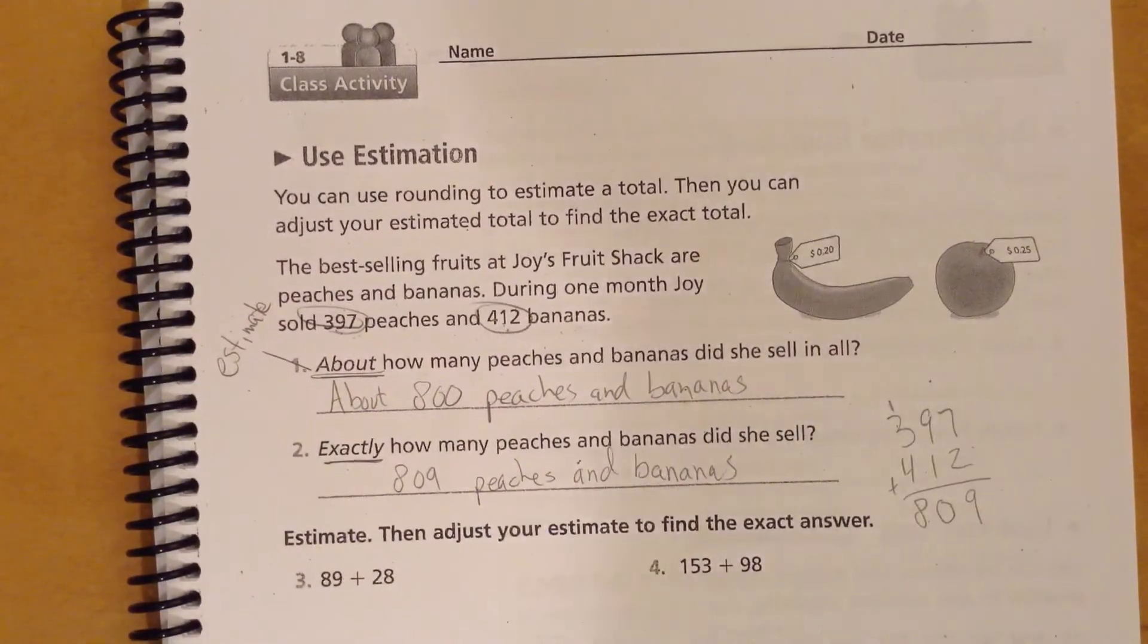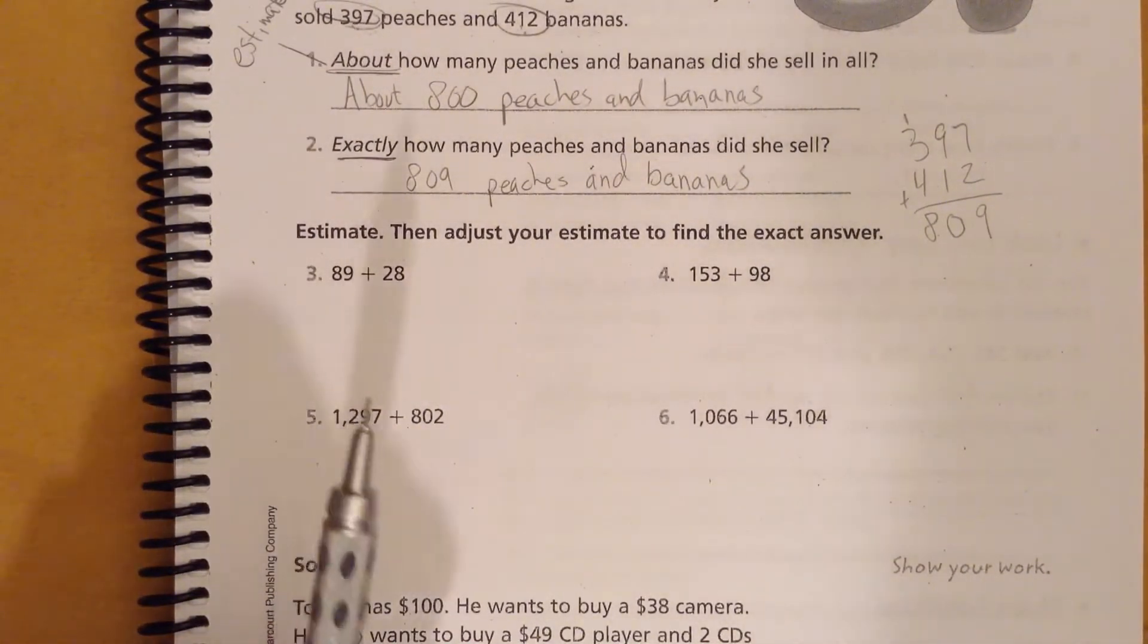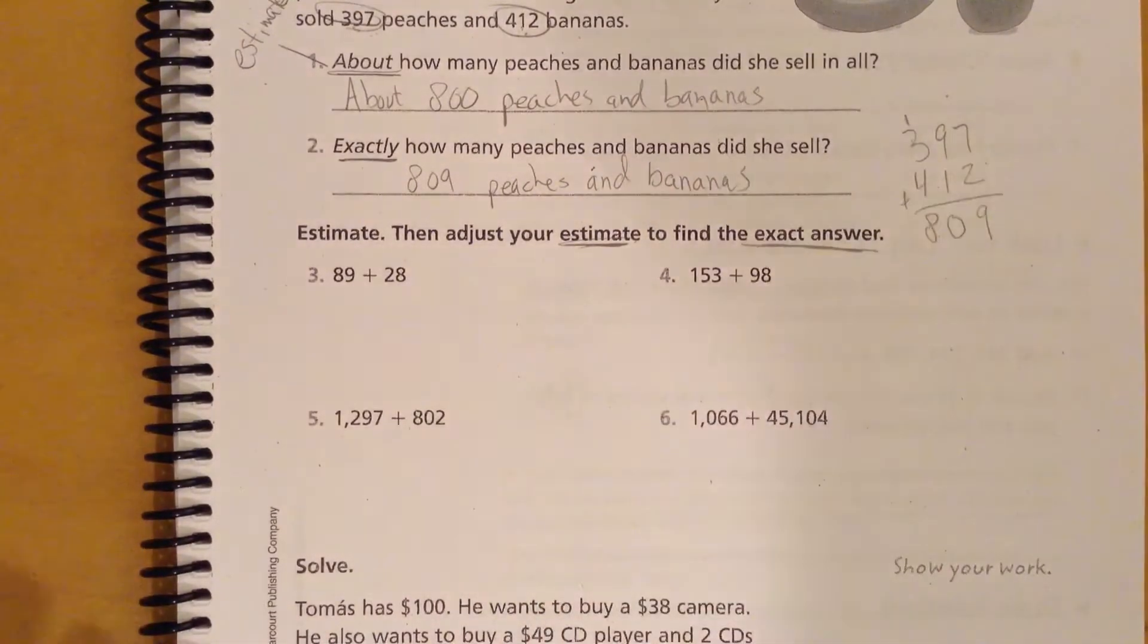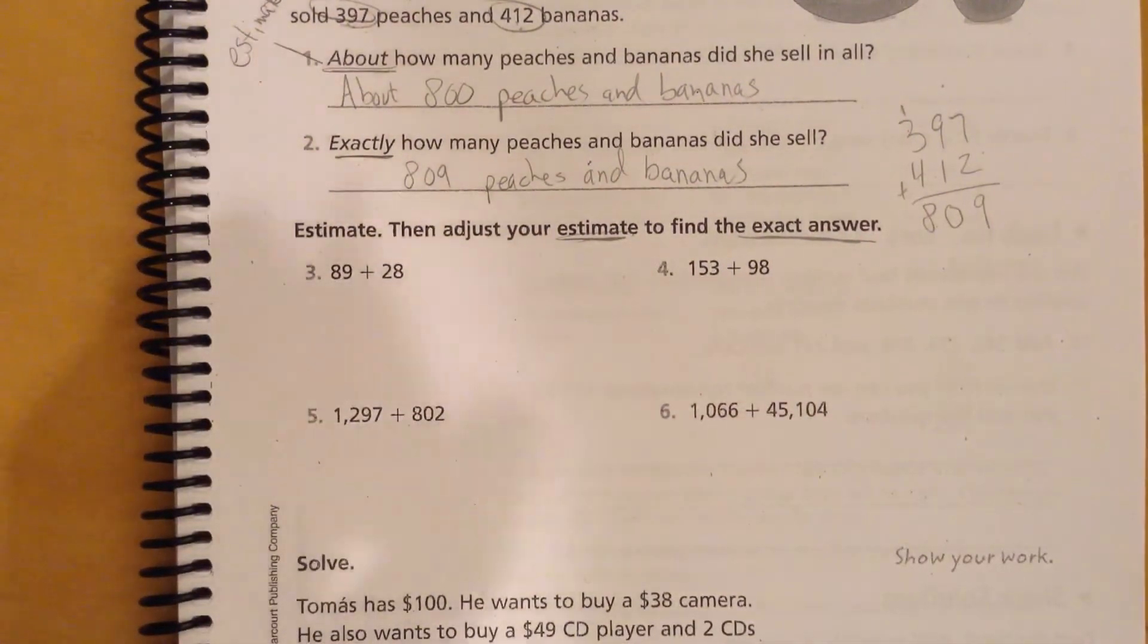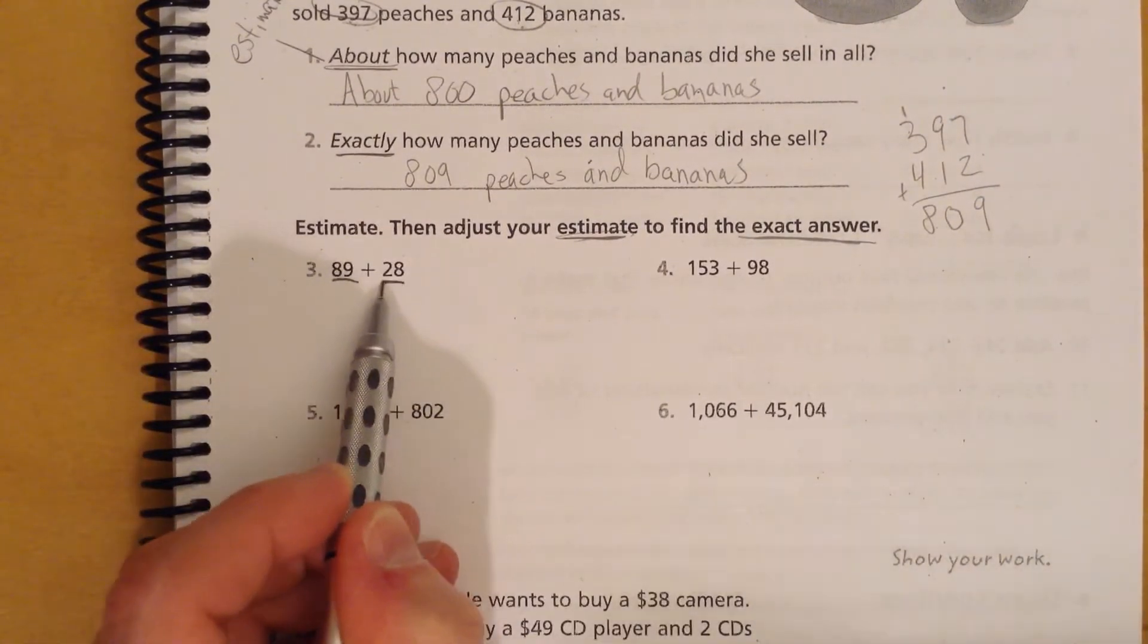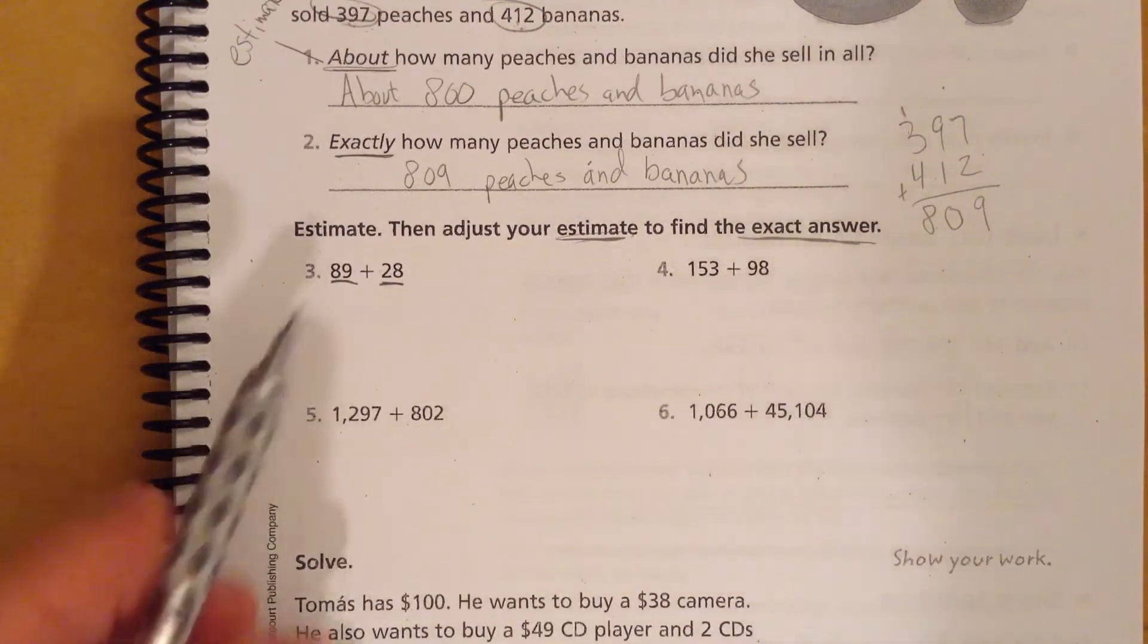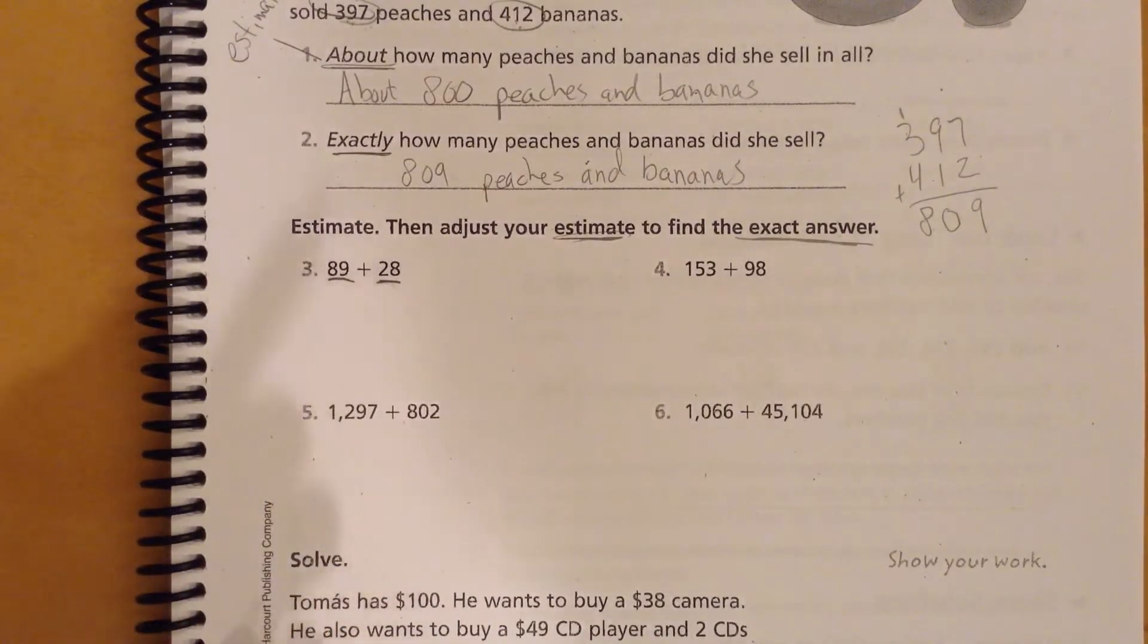So, we're going to go ahead and move on to down here. So, something I want you to kind of think about is it asks you to estimate first and then find the exact answer. So, really it's not saying that you have to get it perfectly right the first time, every time. You just have to get kind of close. So, I want you to think about what is this number really close to and what is this number really close to that would make them easy to add together in your head, okay? So, what I'm saying is that one's kind of close to 90. This one's kind of close to 30. So, in my head, I'm thinking, okay, 90 plus 30 equals about 120.